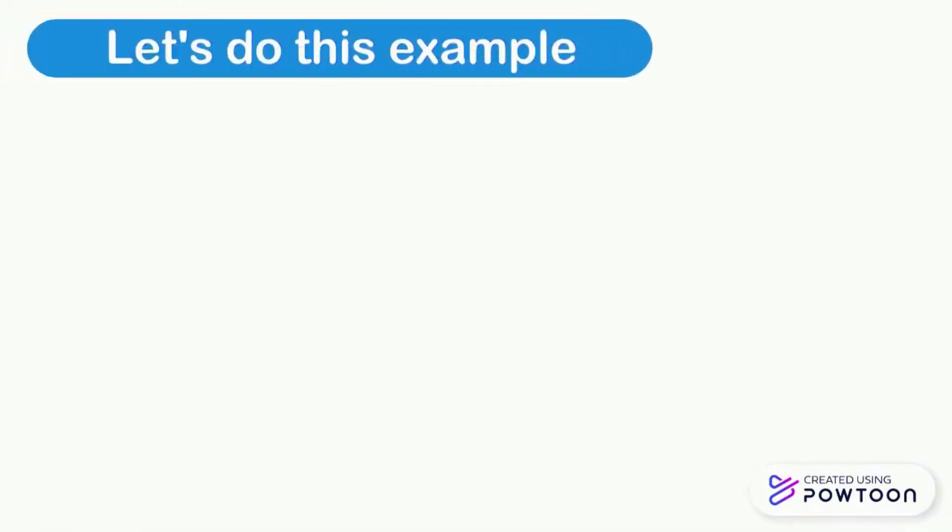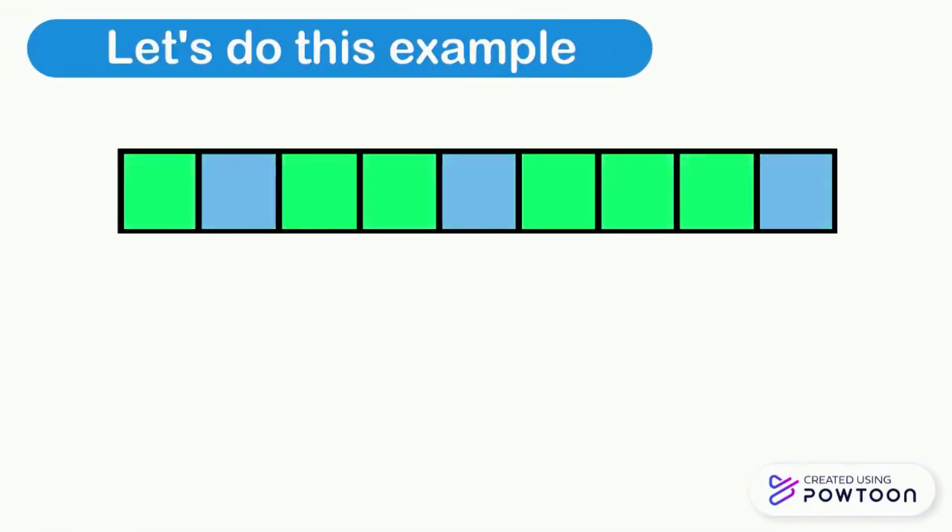Let's do this example. What is the fraction of the blue colored parts? The total number of parts is 9, so we write 9 below the dash. The number of blue colored parts are only 3, so we write 3 above the dash. And the fraction of the blue part will be 3 over 9.